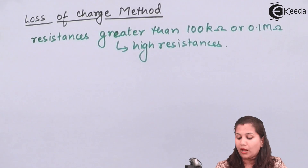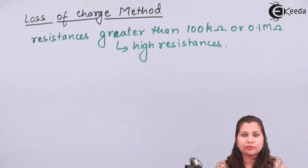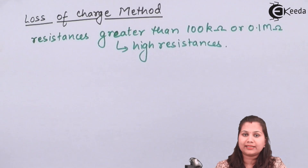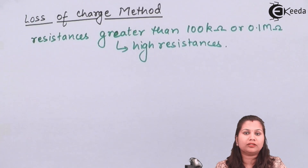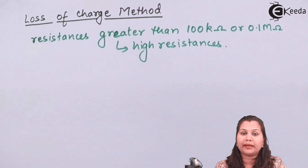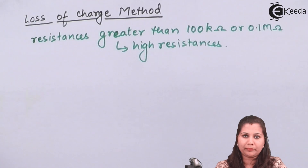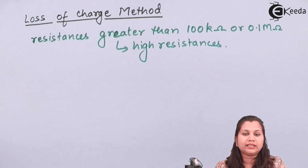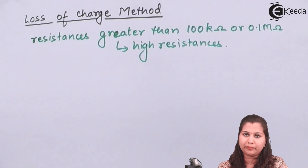There are various methods for the measurement of high resistance, like the direct deflection method, loss of charge method, Megger method, and Megohm method. Here we will study the loss of charge method.